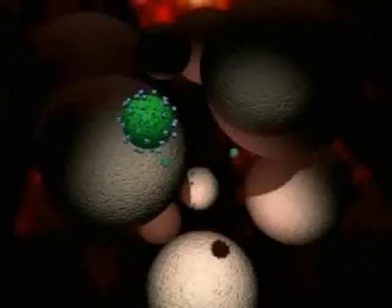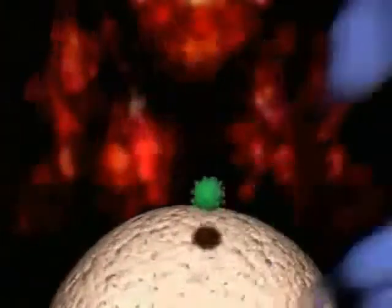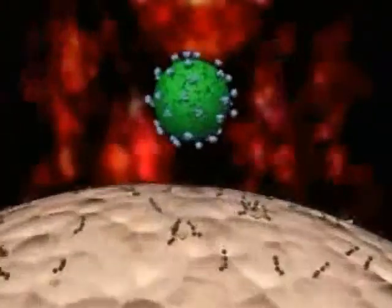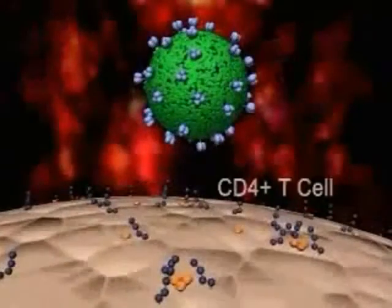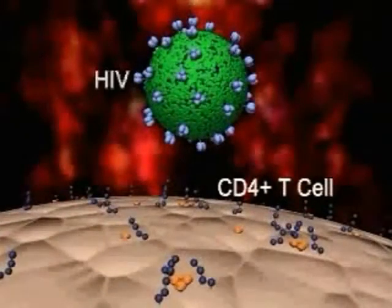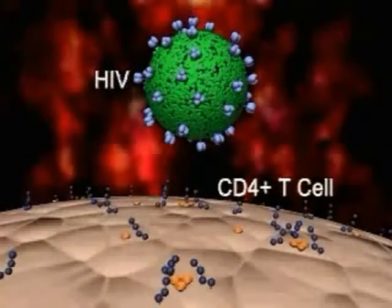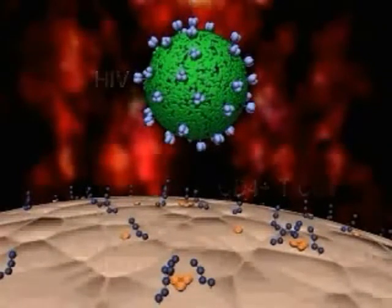HIV, like all viruses, lacks the ability to reproduce on its own. In order to replicate, HIV must target and infect a host cell, such as the CD4-positive human T-cell.